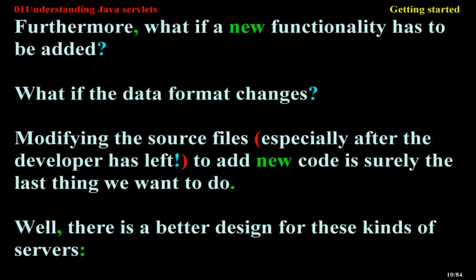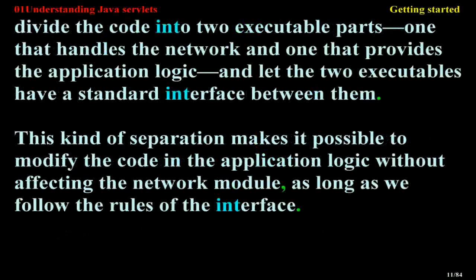Furthermore, what if a new functionality has to be added? What if the data format changes? Modifying the source files, especially after the developer has left, to add new code is surely the last thing we want to do. Well, there is a better design for these kinds of servers. Divide the code into two executable parts: one that handles the network and one that provides the application logic, and let the two executables have a standard interface between them. This kind of separation makes it possible to modify the code in the application logic without affecting the network module, as long as we follow the rules of the interface.